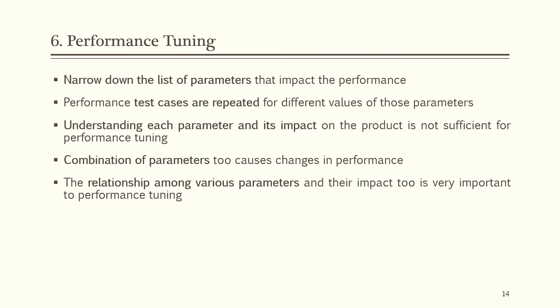Step 6 is performance tuning. Narrow down the list of parameters that impact performance — there are two types: product parameters and operating system parameters. For example, product parameters can be parallel transactions and memory. Parallel transactions are the concurrent transactions supported by the product, and memory is the required memory for execution. Performance test cases are repeated for different values of those parameters. Understanding each parameter and its impact on the product is not sufficient — the combination of parameters causing changes in performance and the relationship among various parameters is also very important.